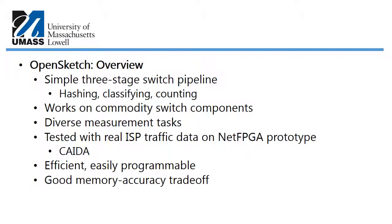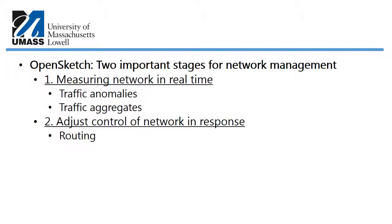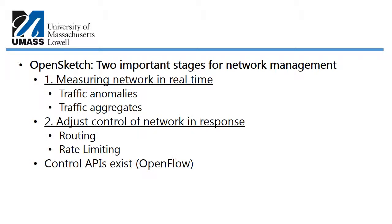OpenSketch identifies two important stages for network management. The first stage is measuring the network traffic in real time — including traffic anomalies and traffic aggregates. The second stage is adjusting the control of the network in response to those measurements, such as routing and rate limiting. Control APIs exist like OpenFlow, but what about measurement APIs?